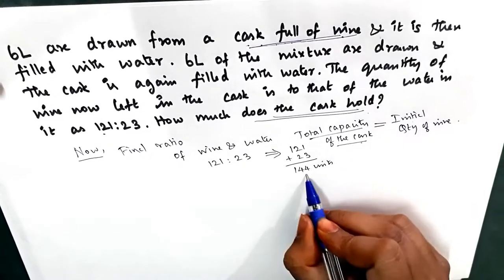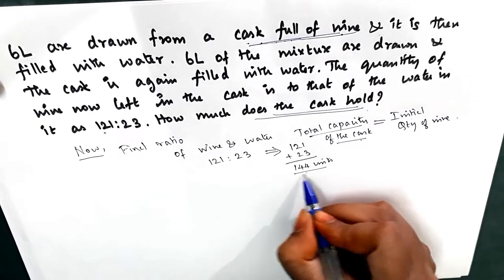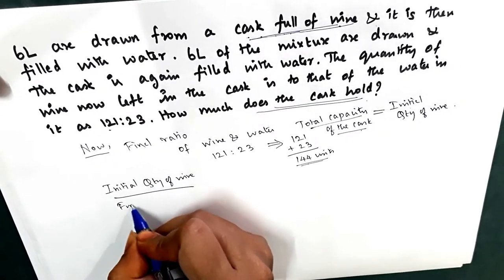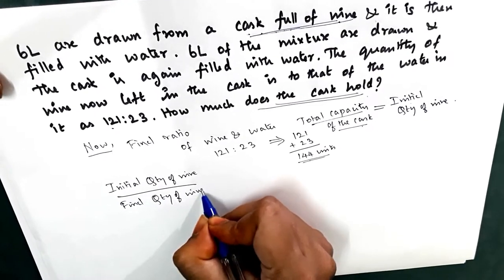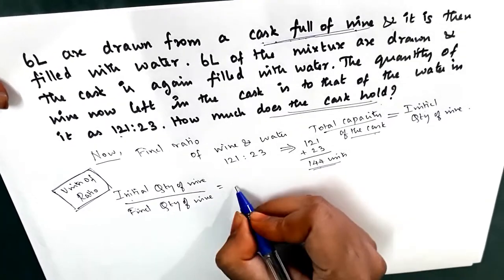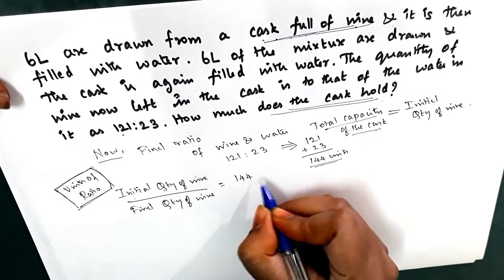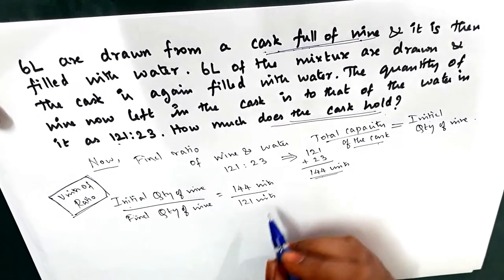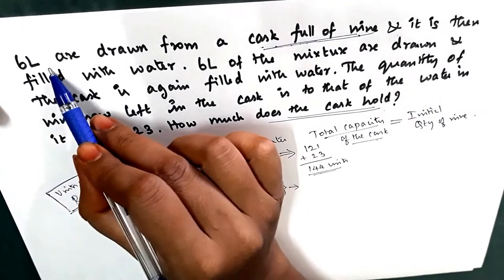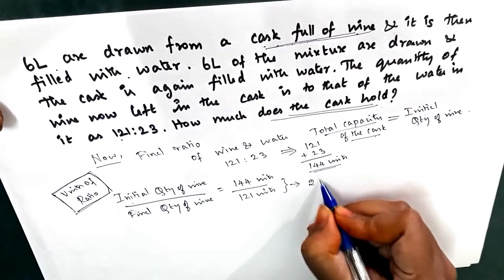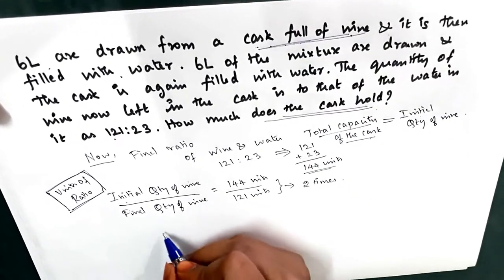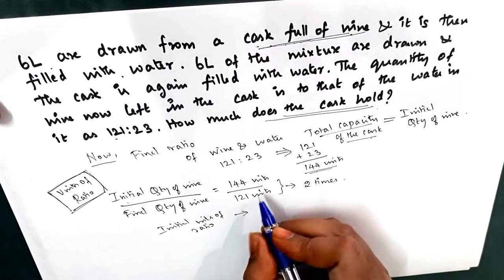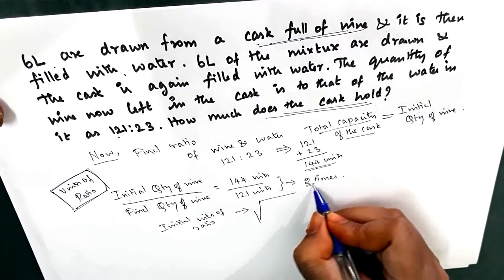The total capacity of the cask is 144 units, which is the same as the initial quantity of wine. We take the ratio of initial quantity of wine to final quantity of wine in terms of units of ratio. The initial quantity of wine is 144 units and the final quantity of wine is 121 units. The 6 liters were drawn and replaced with water, done two times. To get the initial units of ratio we reverse the process — since it was done two times, we take the square root.